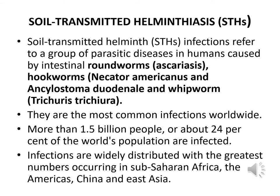Soil-Transmitted Helminth infections refer to a group of parasitic diseases in humans caused by intestinal roundworms, also known as Ascariasis, hookworms — these include Necator americanus and Ancylostoma duodenale — and whipworm, known as Trichuris trichiura. These are the most common infections worldwide, as more than 1.5 billion people, or about 24 percent of the world population, is infected with them. Infections are widely distributed with the greatest numbers occurring in Sub-Saharan Africa, the Americas, China, and East Asia.